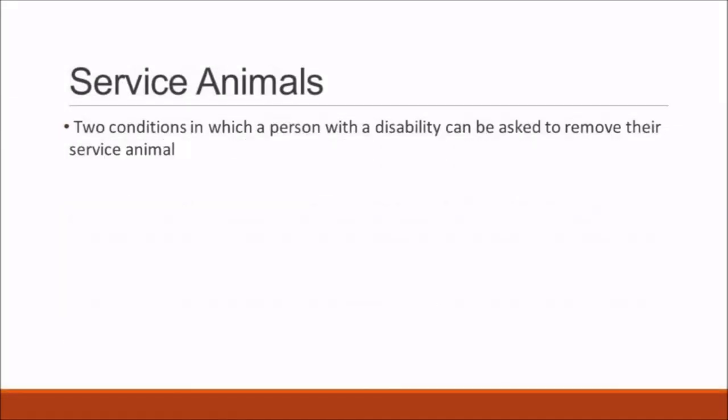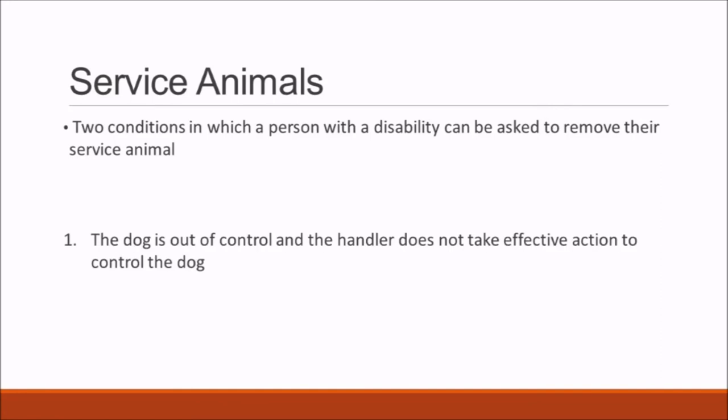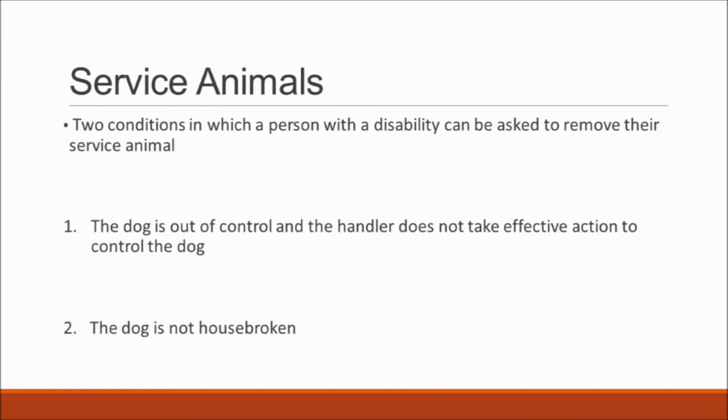There are two conditions under which a person with a disability can be asked to remove their service animal: if the dog is out of control and the handler does not take effective action, or if the dog is not housebroken. However, if removal is warranted, the covered entity must still offer the person with a disability the opportunity to obtain FNS benefits and services without the animal's presence.